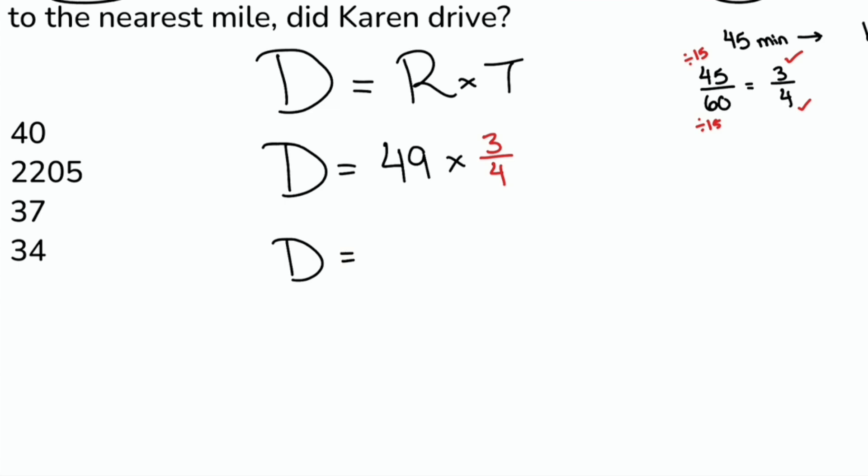And now we can solve this nice and smoothly. So distance equals 49 times 3 over 4. 49 times 3, that should be 147. And then from there, we should have ourselves over 4. So then 4 into 147. We'll go ahead and do some long division there.